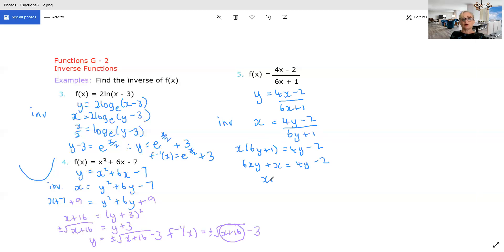So I'm going to bring my x plus 2 there and bring this 6xy over here by subtracting. Then I can take out a y as a common factor. And now I can divide both sides by this expression here. So y will be x plus 2 over 4 minus 6x. So that will be our f inverse.